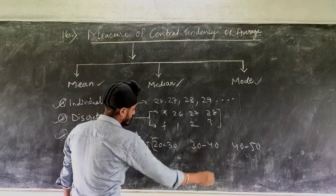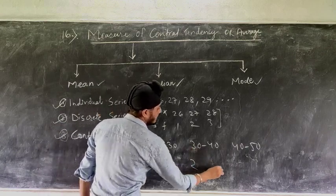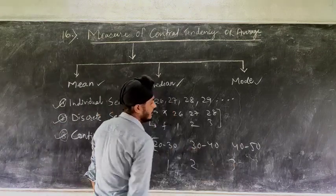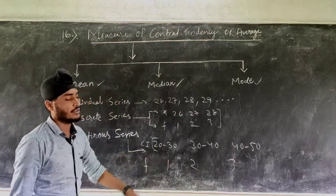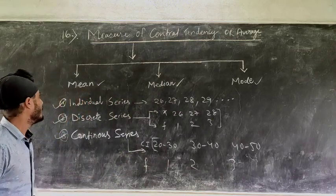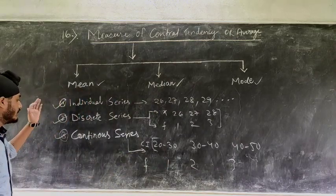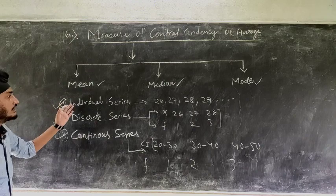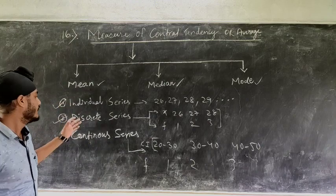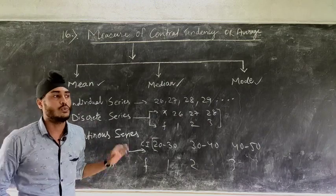These are called class intervals and frequency will be given as 1, 2, 3 and so on. This way, mean is classified into three types: individual series, discrete series and continuous series.